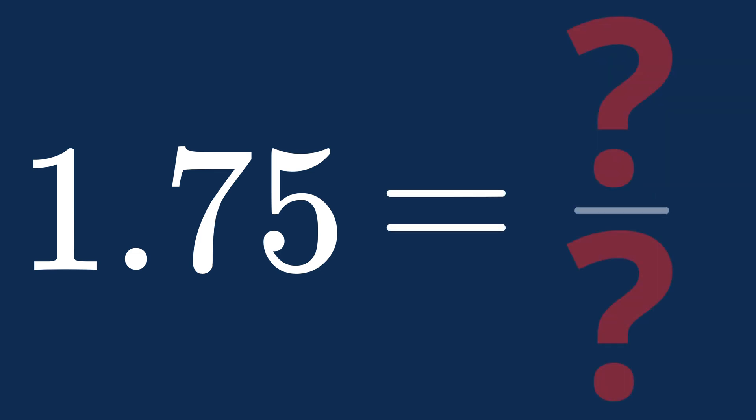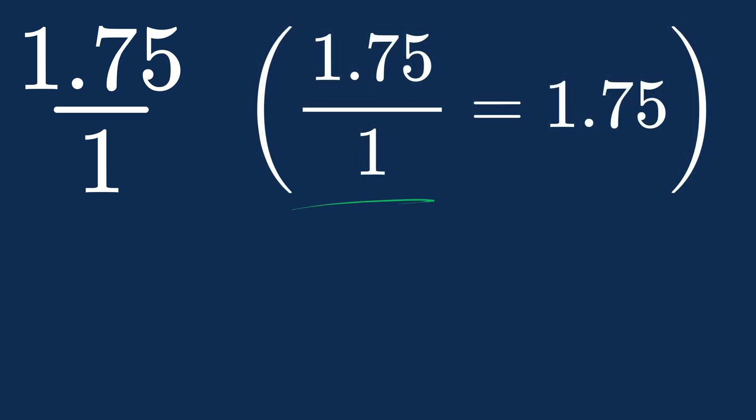To convert 1.75 to a fraction, we start by expressing it as 1.75 over 1. This doesn't change its value because dividing 1.75 by 1 still equals 1.75.